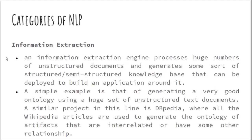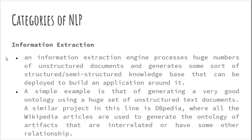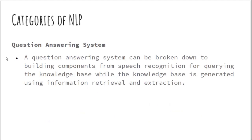Information extraction processes a huge number of unstructured documents and generates structured knowledge. For example, if you have many Wikipedia articles on a topic, the machine tries to generate an ontology based on those articles, creating structured knowledge from unstructured or semi-structured documents.